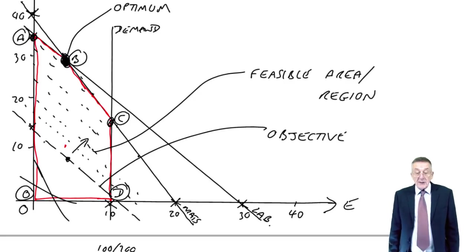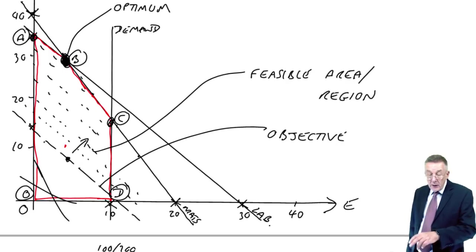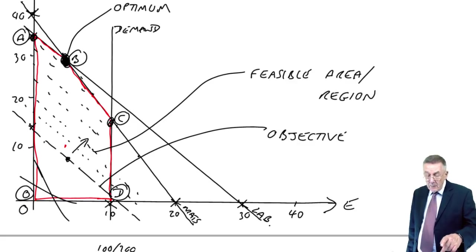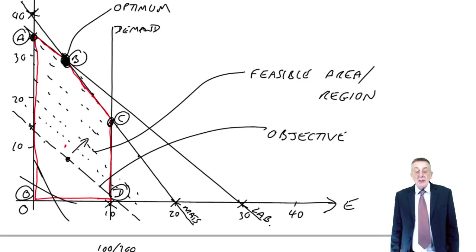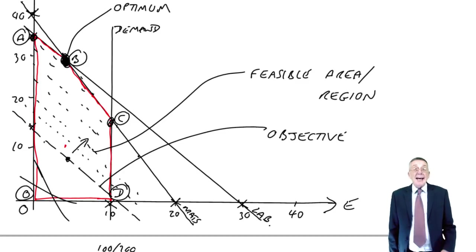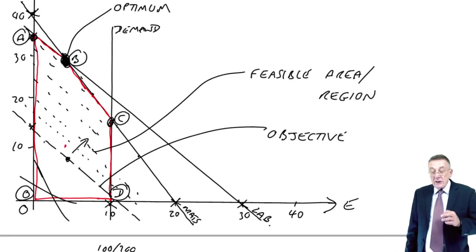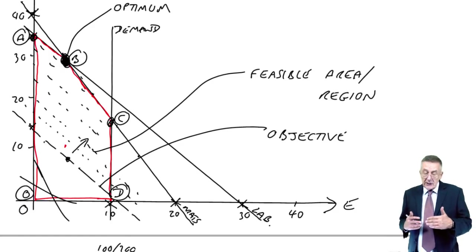At point A, you're making zero e's and 30 something s's. At point C, you're making 10 e's and, I'm not sure how many s's, by all means. But it takes longer. And again, you could be specifically tested on knowing this idea of moving out the objective function.